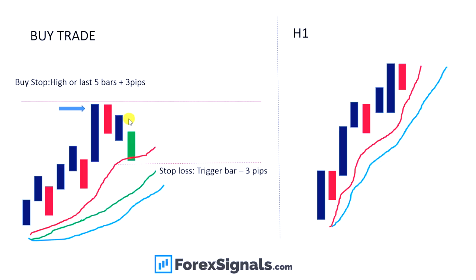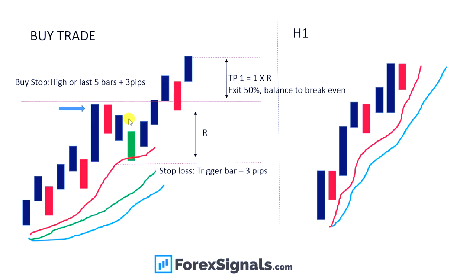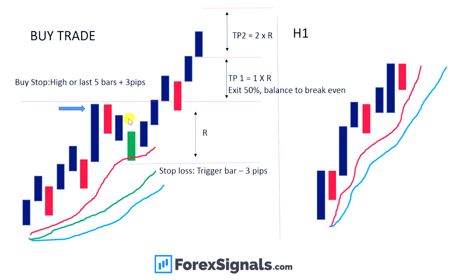We establish our risk by placing a stop order three pips below the trigger bar. Once we've established our risk, we position-size accordingly so that the maximum we lose on this trade, if it hits our stop, is a predetermined percentage of the account. We then put in profit target one at one times the initial risk. If price moves up to take out the first profit target, we exit half the trade and move the balance to break even, then put in profit target two at two times the initial risk.